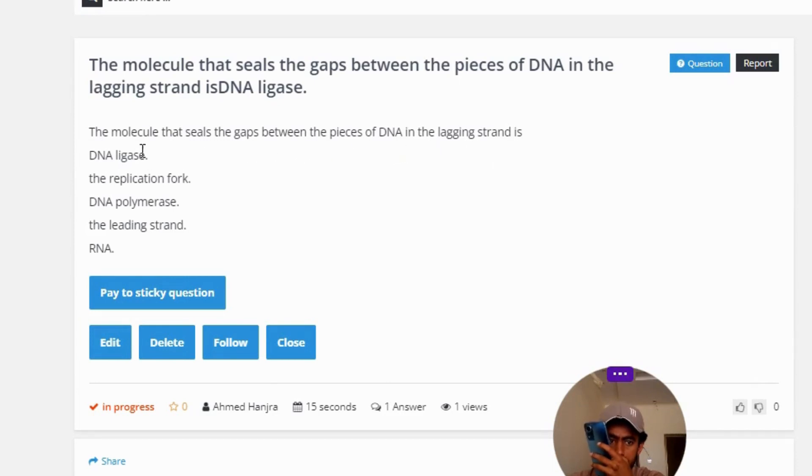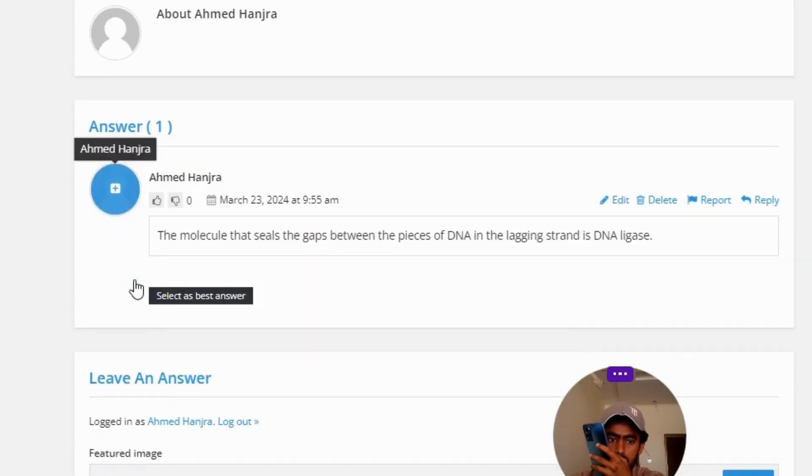DNA ligase, the replication fork, DNA polymerase, the leading strand, or RNA. The correct answer to the question—the molecule that seals the gaps between the pieces of DNA in the lagging strand—is DNA ligase. So that's the correct answer of the question.